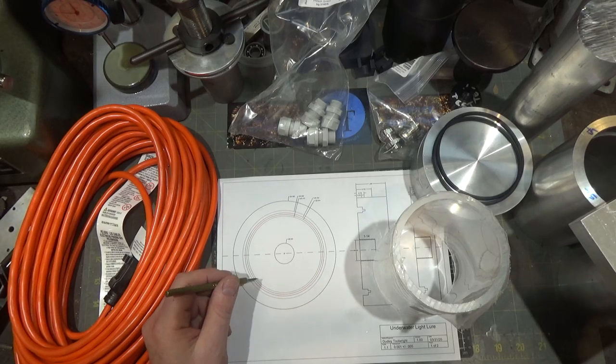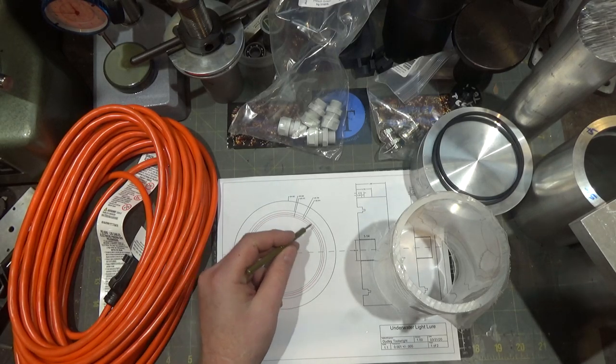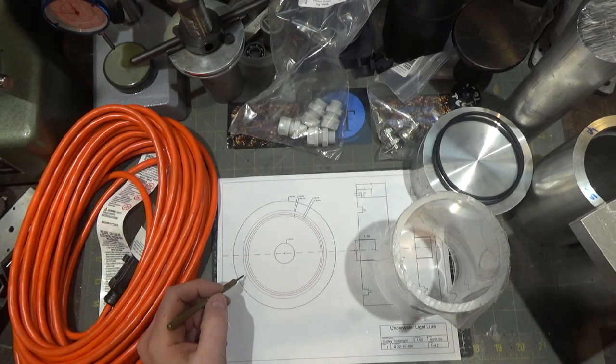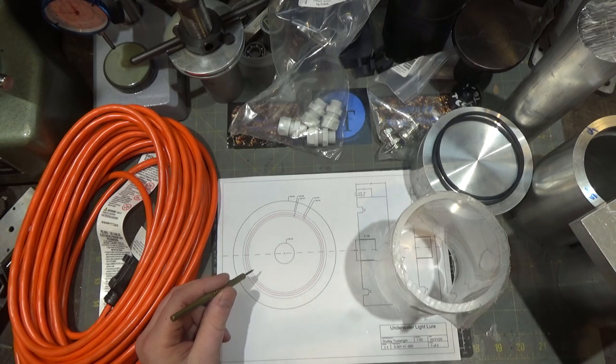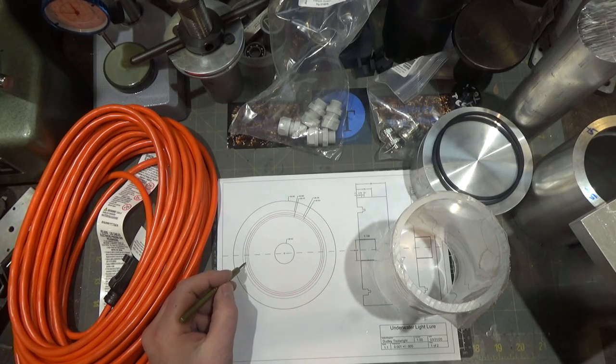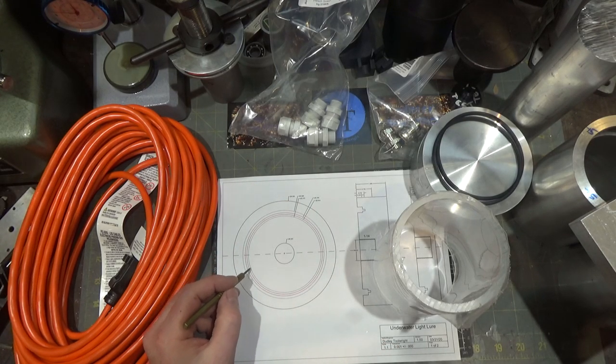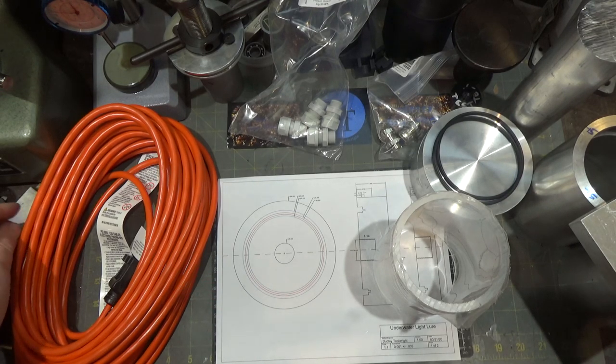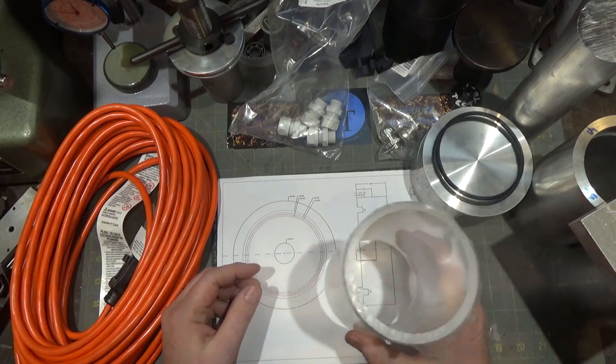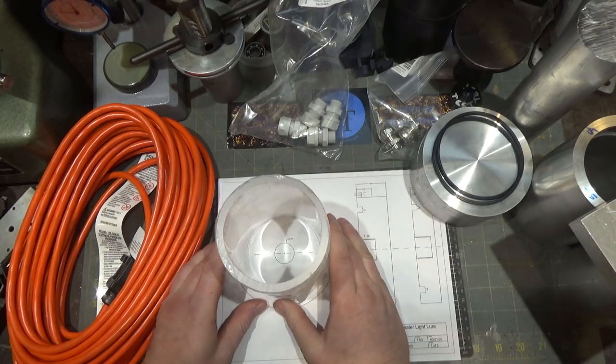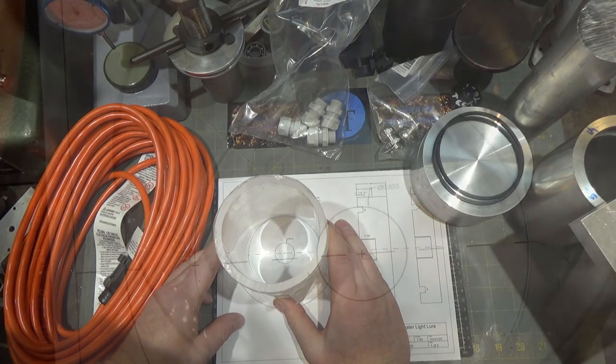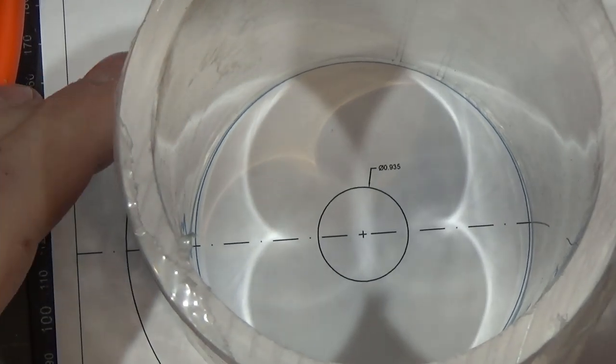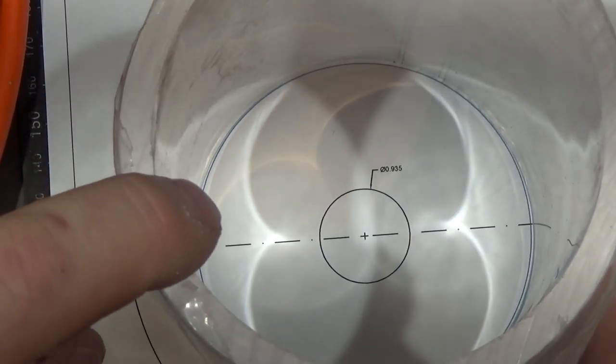Before we head over to the lathe to trepan out the groove for the acrylic tube and trepan the groove for the gasket, I printed a scale drawing, so this is a one-to-one drawing. The red lines here are the gasket, the blue lines are the outside dimensions of the acrylic tube in an ideal world. However, let's see if you can see this. When I line this up, I don't know how easy this is for you to see, but the acrylic tube...